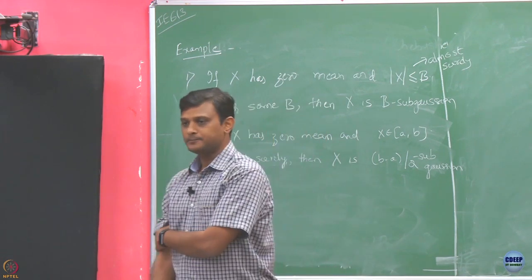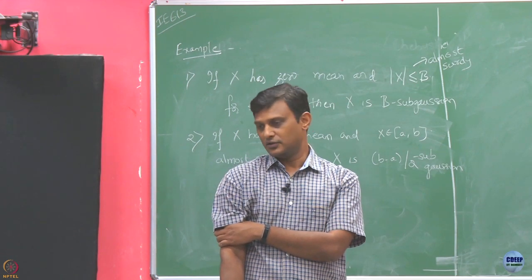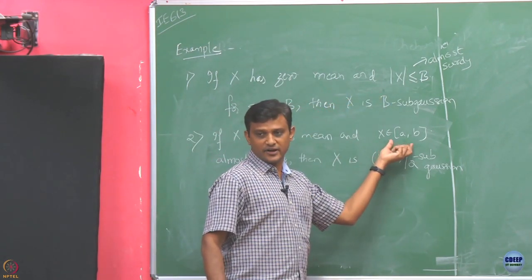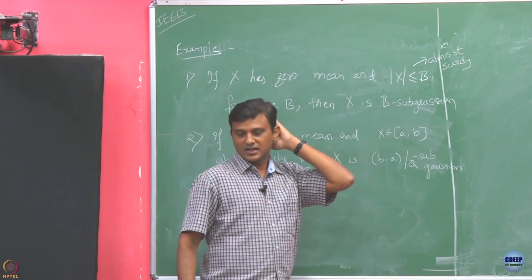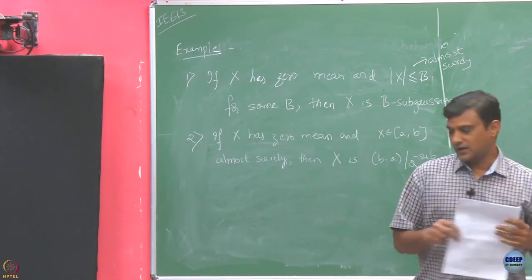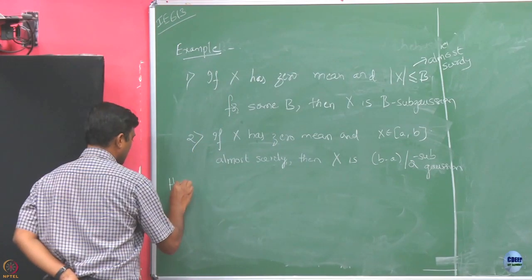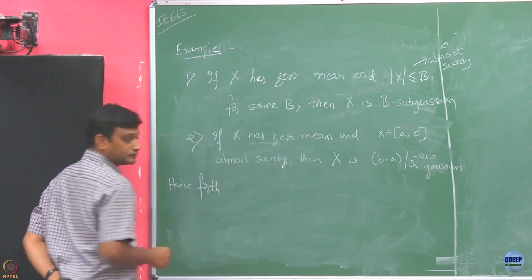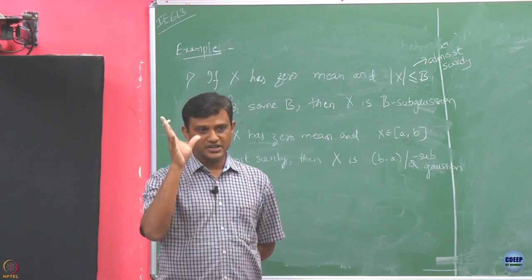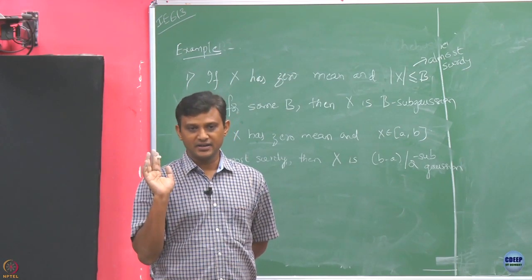Henceforth, we will be focusing on random variables or distributions that are just sub-Gaussian with some parameter. We really need not worry whether they are bounded or supported on some bounded interval — anything like that is fine. We will just say that it is going to be sub-Gaussian with some sigma.